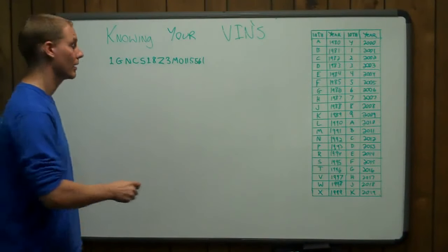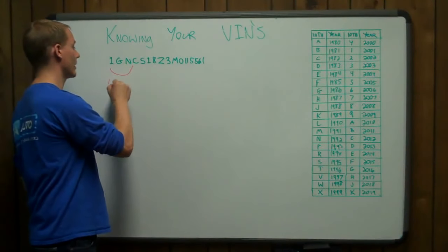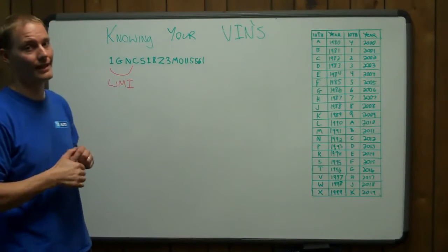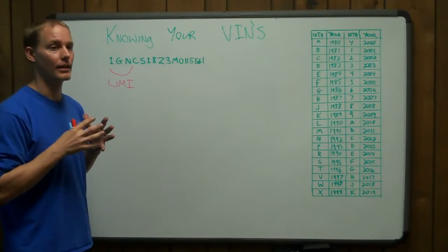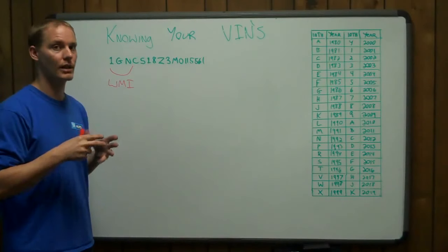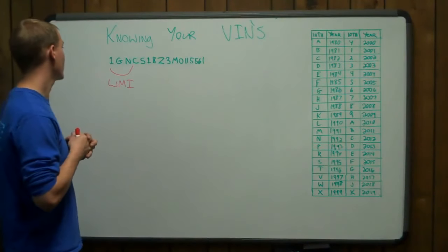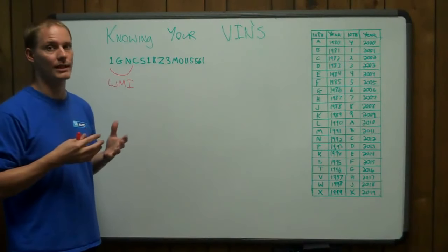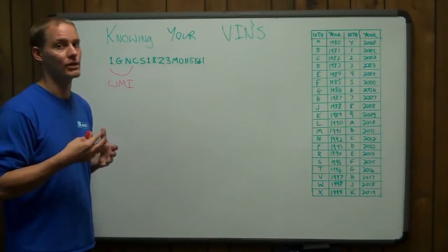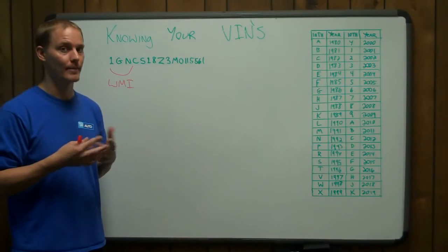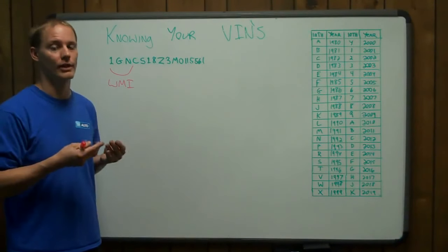The first three digits of the VIN are known as the WMI, which is World Manufacturer Identifier. That is the country of origin, the manufacturer, and the division from that manufacturer. So in this case, the 1 means United States. If it was J, it would mean Japan. If it was a 4, it would mean Canada. So this is the country where the vehicle was made.